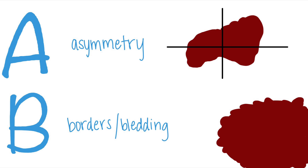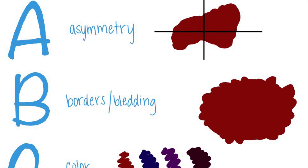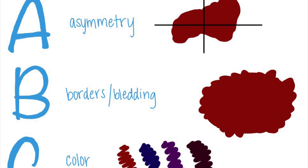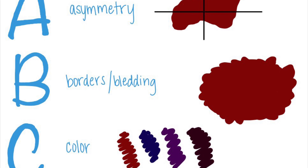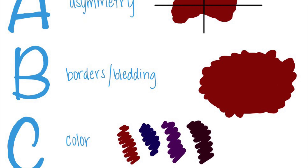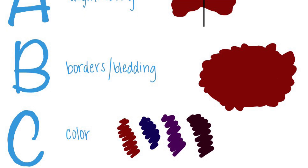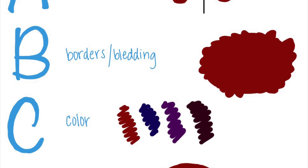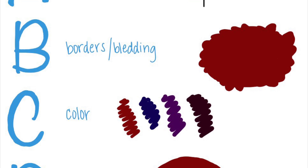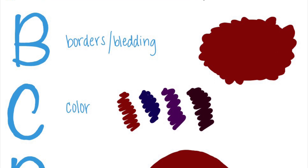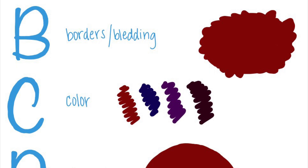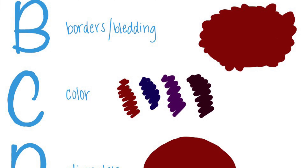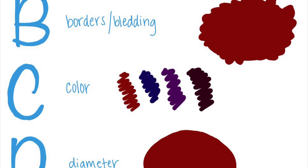In this example, you can see that the borders are irregular. It's also alarming if the lesion is bleeding. C stands for color — you want to be looking for a dark black or multiple dark colors.